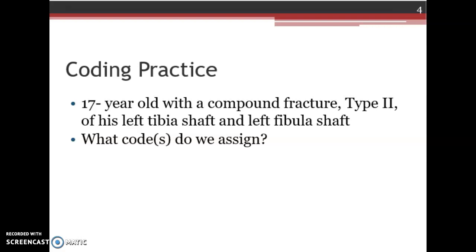Once we get there, we see that we need a 2 in our 6th spot for the left extremity, because it was the left. And then our 7th character, we're going to do B for initial, and then it's a type 2 fracture. So, that's where we're getting our 7th character B. Our first code is S82.202B.